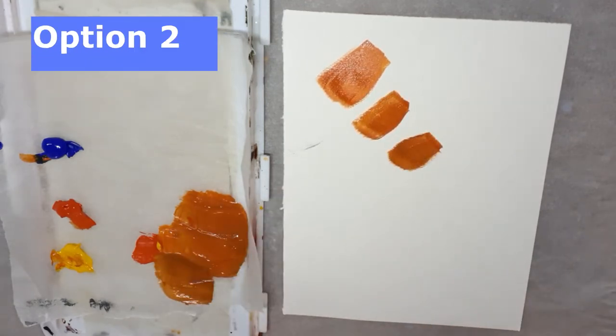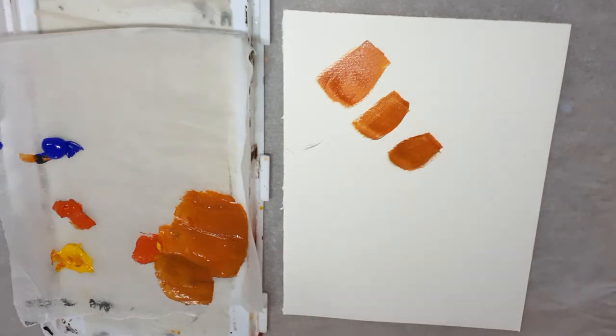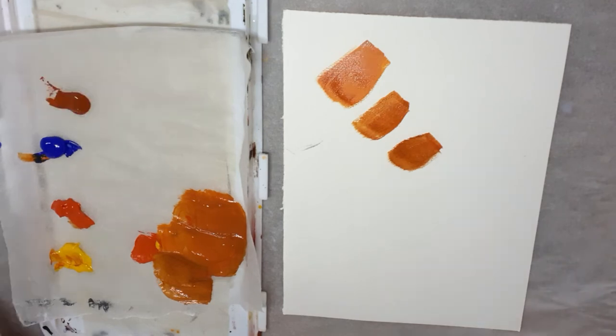So another way to make terracotta would be by using burnt sienna. So you've already got your brown. Actually, burnt sienna is quite a good color for terracotta on its own.